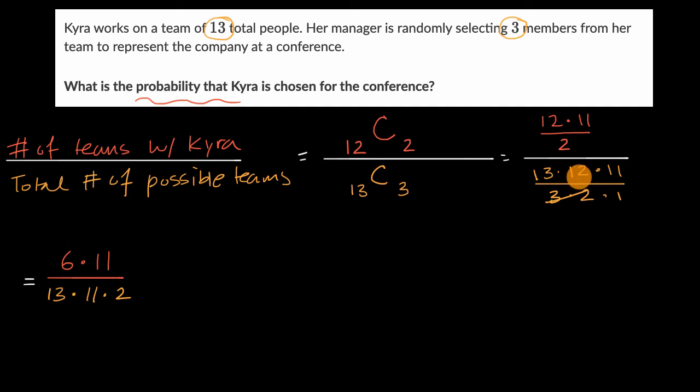Just to be clear, I divided both the denominator and this numerator over here by 6 to get 2 right over there. Now this cancels with that. And if we divide the numerator and denominator by 2, this is going to be 3 here. This is going to be 1. And so we are left with a probability of 3/13ths that Kyra is chosen for the conference.